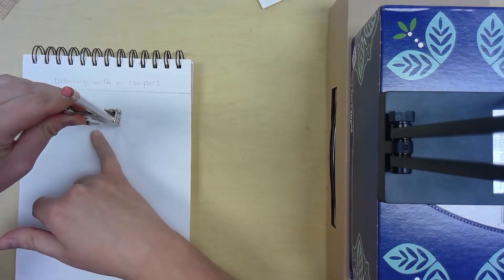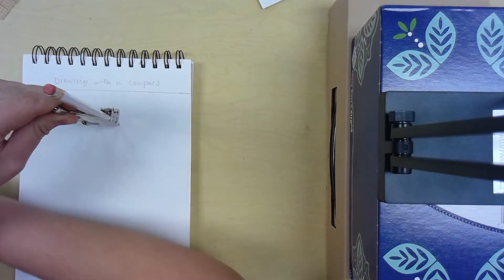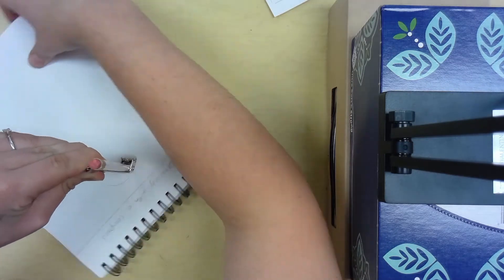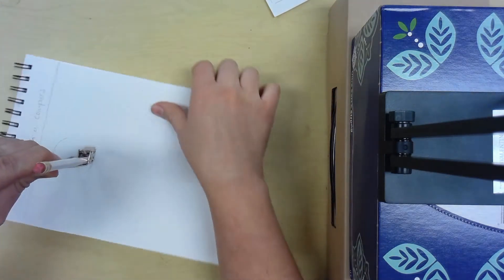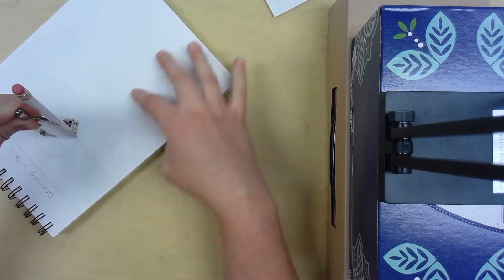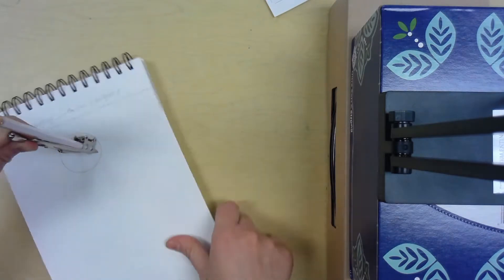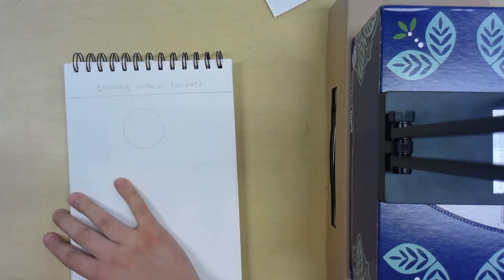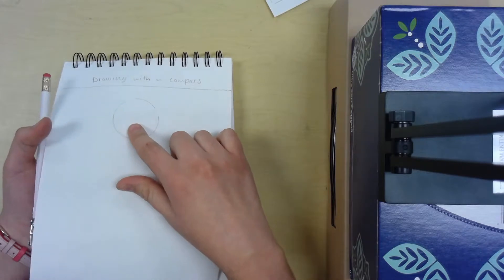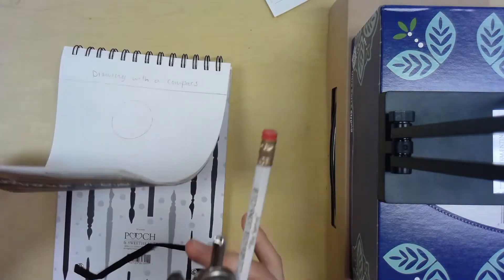Make sure your pencil's touching the paper, so my metal rod is touching the paper and my pencil is touching the paper. What you're going to do next is you're going to spin your paper. Do not move the hand that's holding the compass. Now my pencil moved a little bit, so I'm going to go over this again. Now if I take my compass off, you should have a perfect circle.